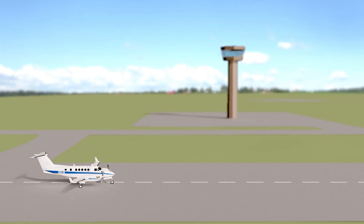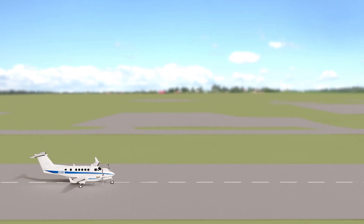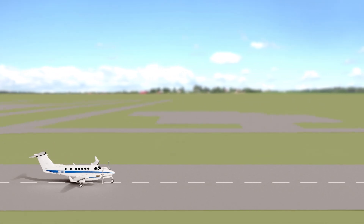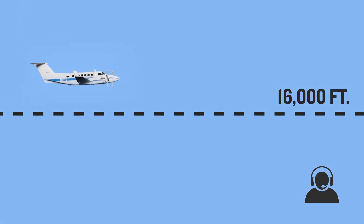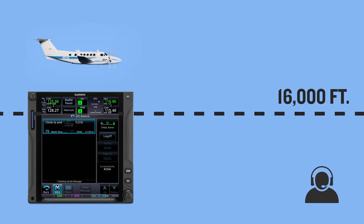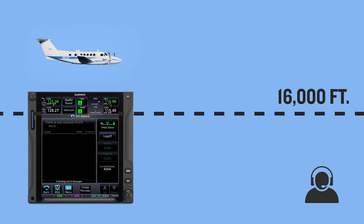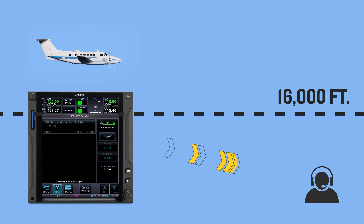After you receive and respond to your clearance, you'll stay logged on to the Datacom session, but will switch to voice communications until at least 16,000 feet. At 16,000 feet, you can now send and receive en route messages. ATC is expecting a response within one minute of you receiving their message. Note that selecting standby will not close out the message thread, and a timely response is still needed.